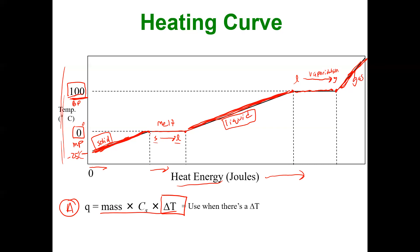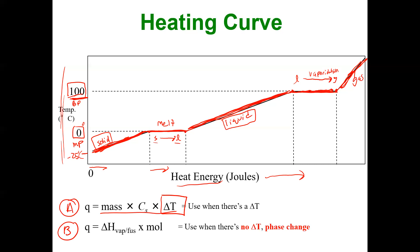Wherever there's a flattening of the curve and no temperature change — simply a change in state or phase change — we use equation B: Q equals enthalpy times moles. Equation B is used when there's a phase change and no temperature change. When I melt, I use the heat of fusion. When I boil or vaporize, I use the heat of vaporization.